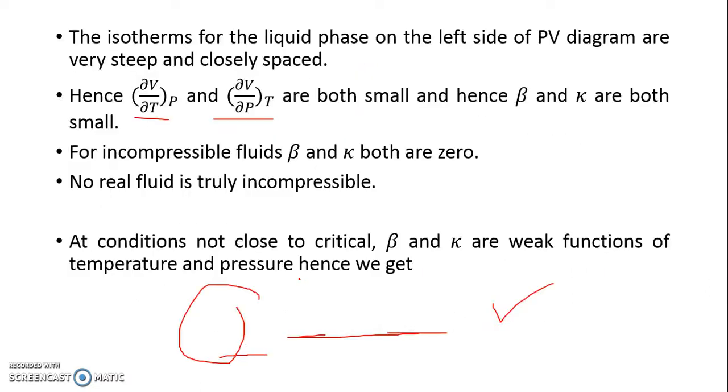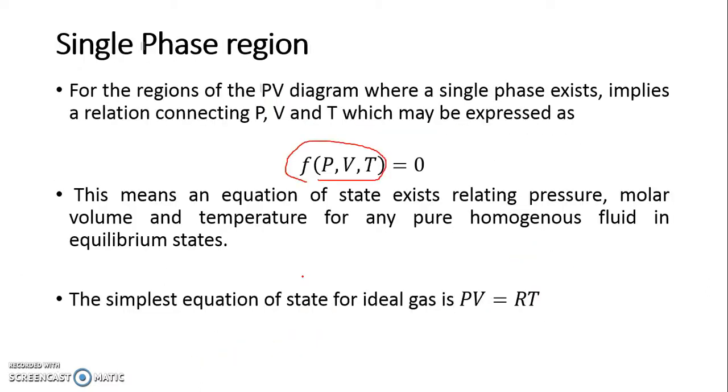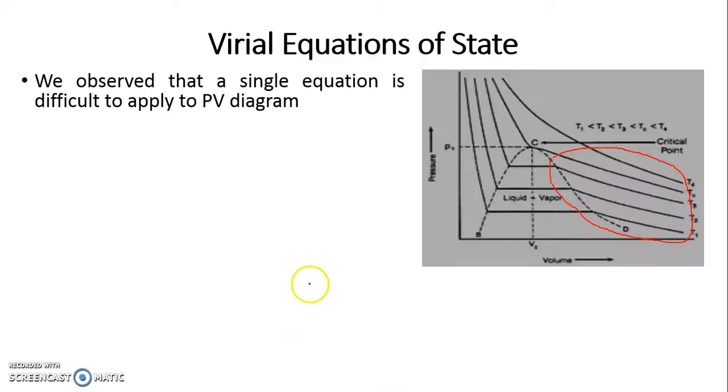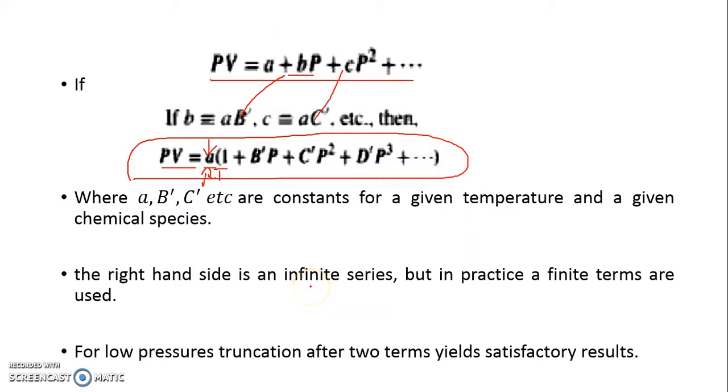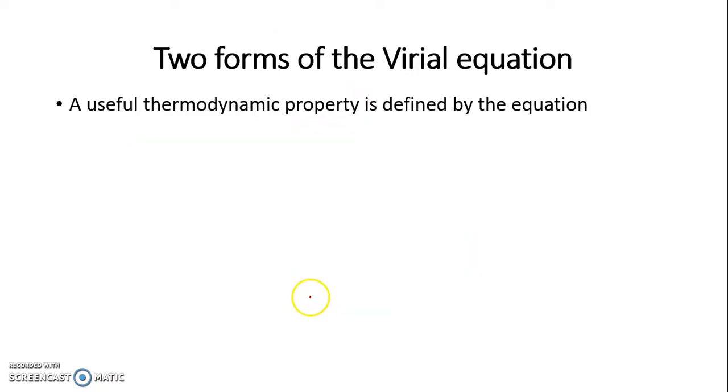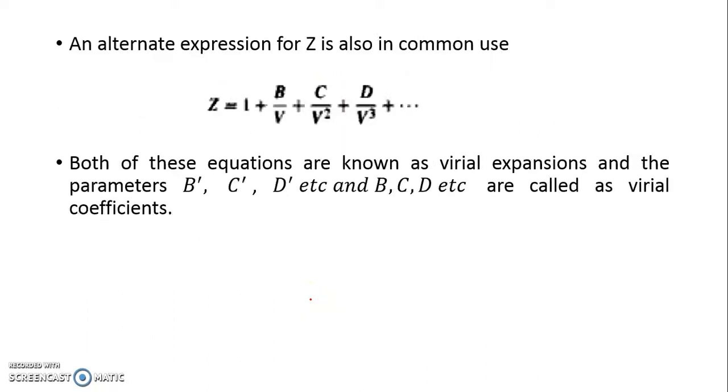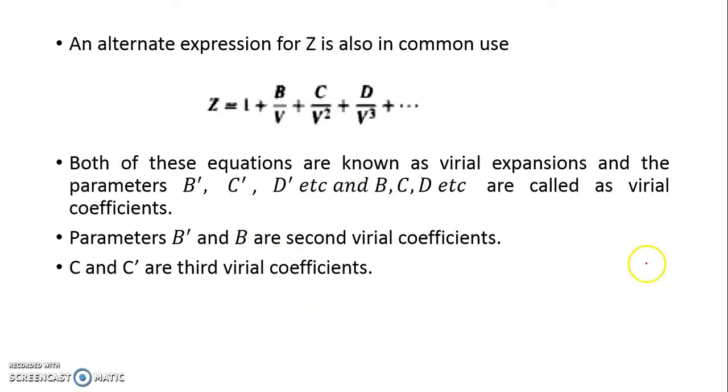What we have seen is how we can develop an equation of state from PVT basic behavior for a liquid phase, and the virial equation for gas phase. When we meet next time, we will talk more about the parameters B, C, D of the virial equation and how to utilize it for calculating volume or understanding PVT behavior. Thank you.